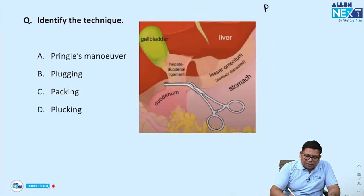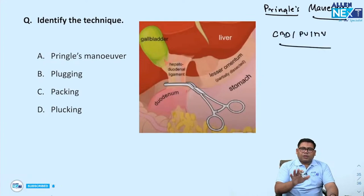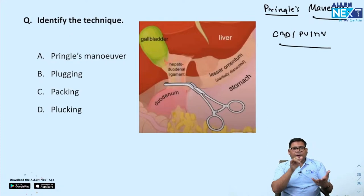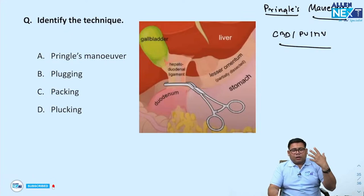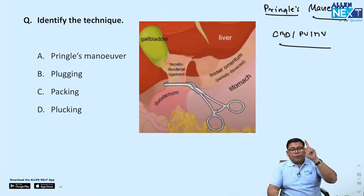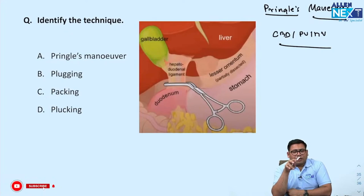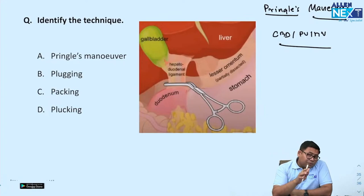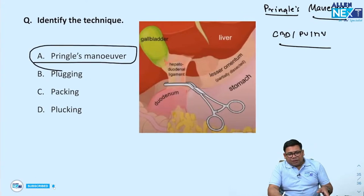This procedure is known as Pringle's manoeuvre — occlusion of the portal structures. You occlude the CBD, portal vein, and hepatic vessels. For a patient with liver bleed, do a Pringle's. If bleeding does not stop on Pringle's, it means the hepatic vein is involved — ligate that side. If bleeding stopped, release hepatic artery; if bleeding continues, the hepatic artery is the source. Portal vein injury must always be repaired, not ligated.